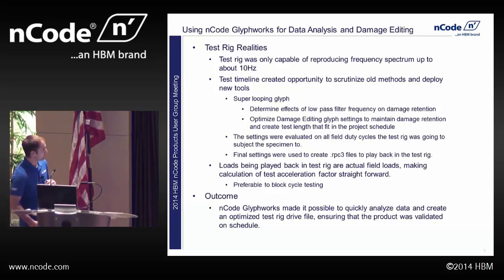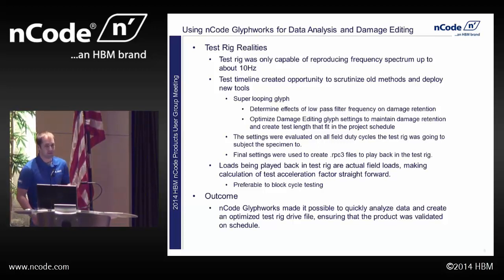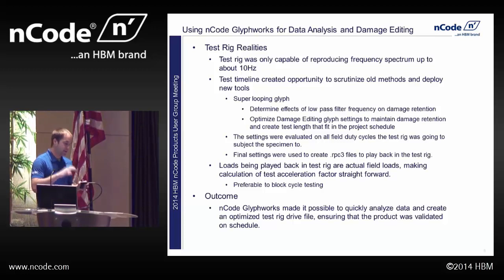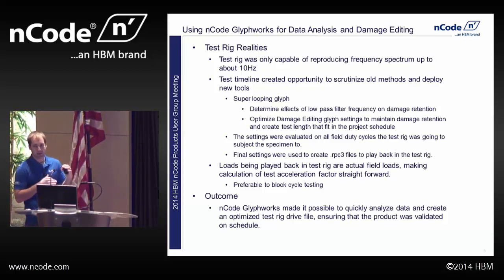Another reality of all testing is the test timeline we were given. That shortened timeline actually gave us the opportunity to look at some of the old methods we'd been doing, like block cycle testing, and deploy new methods now available with ENCODE Glyphworks. One of the most useful ones I found, besides damage editing, is the super looping glyph. It allows you to put in multiple values for a different setting of each glyph, and it'll automatically play through so you can see how much your calculated values change based on those settings.